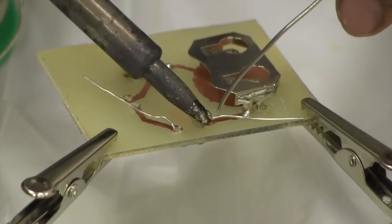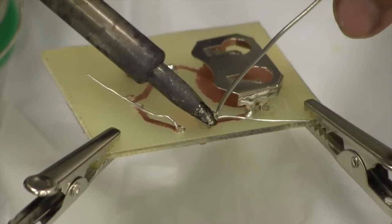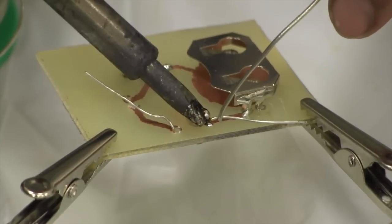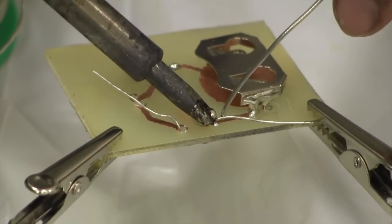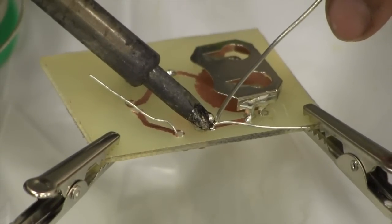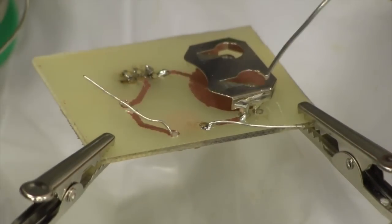While soldering, it's important to heat both the part and the board, and then let the solder melt by touching those instead of the soldering iron. This ensures that the solder will provide a good electrical and mechanical connection.